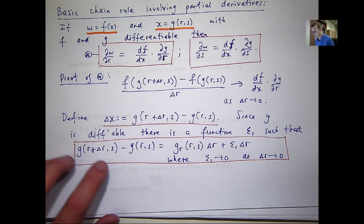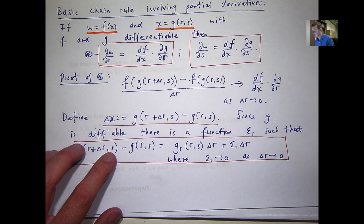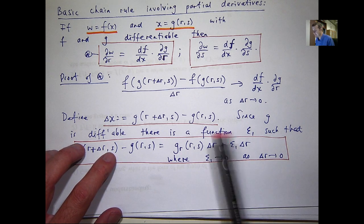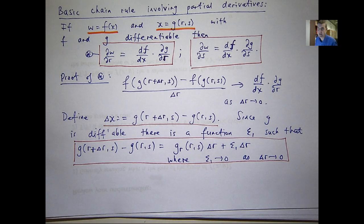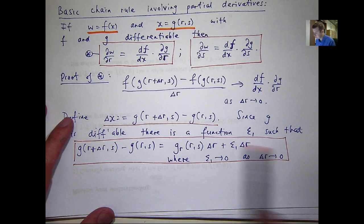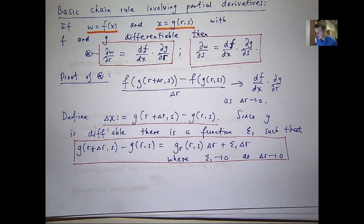I can also vary the second variable, and so I'd have an s plus delta s in there, and I would have two more terms. I would have a partial derivative with respect to s times the delta s, and another term here involving another function, epsilon sub 2 times delta s, and this would be satisfied for the corresponding epsilon sub 1 as delta s goes to 0. But it's not necessary. This is okay for what we want to do here.